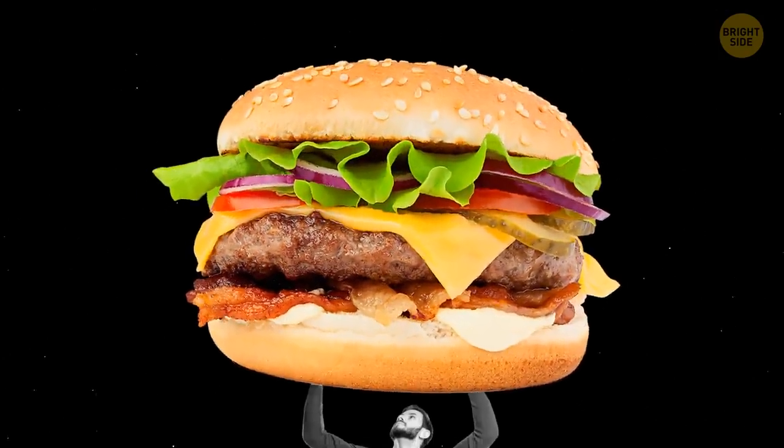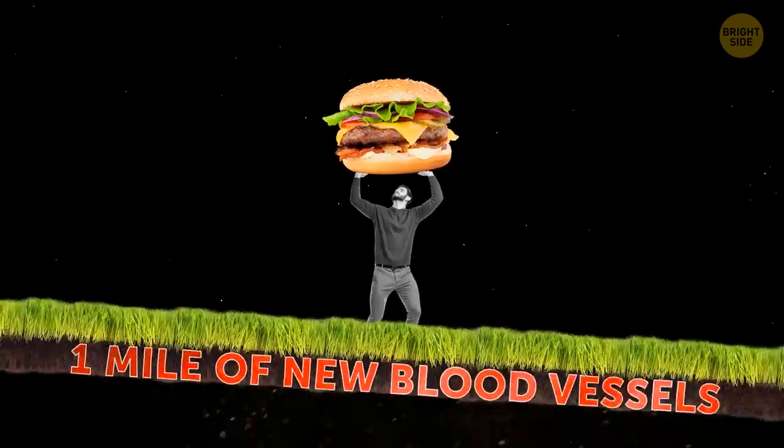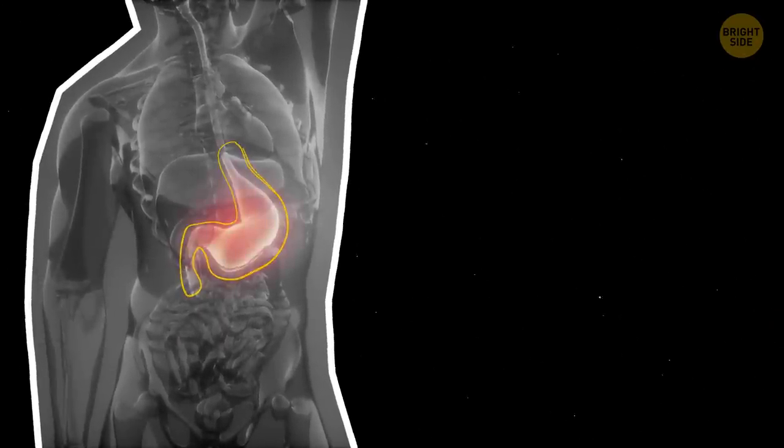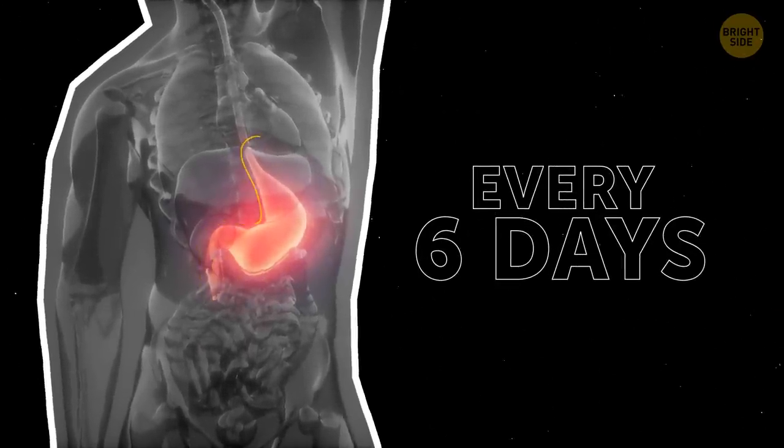For every pound of fat you gain, you generate 1 mile of new blood vessels to supply oxygen and nutrients to your body. Your stomach produces a new lining every 6 days to avoid digesting itself.